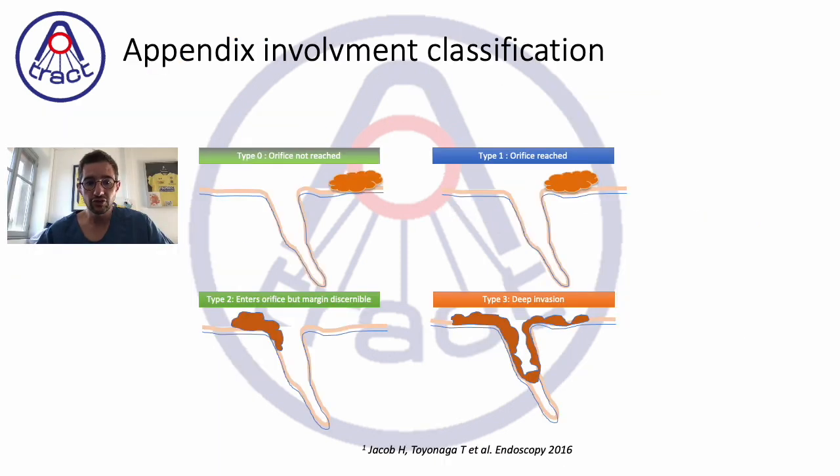So first we should go to literature and to the description of appendix involvement thanks to Toyonaga's classification. Probably the type 0 with an orifice which is not reached has nothing different with conventional colorectal ESD.